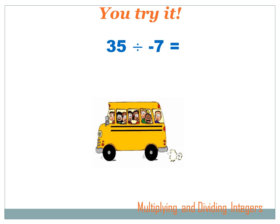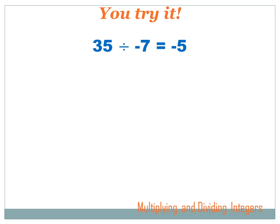Try this one. Just like in the last problem, I've got a positive number and a negative number that I'm working with. And if one's positive and one's negative, the results are going to be negative. 35 divided by -7 is -5.